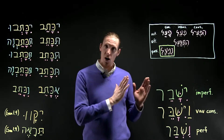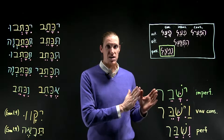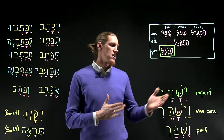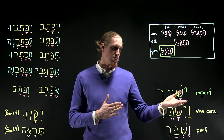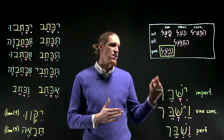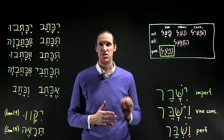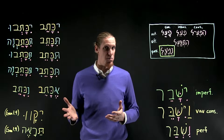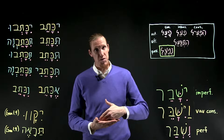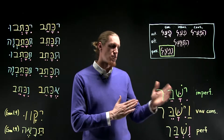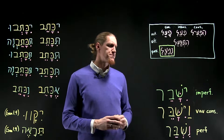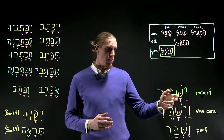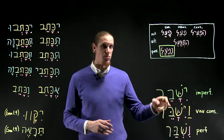You see all of the visual signs of the Niph'al imperfect in this word, and you also hear the vocal pattern. The visual signs are: a hiriq under the prefix, but the most obvious visual sign is the dagesh forte in the first visible root letter. I say 'first visible root letter' because sometimes the first root letter may disappear and the dagesh forte could be in the second root letter. Most often it's in the first root letter. So you have hiriq under the prefix, qamets under the first root letter, and tsere under the middle root letter.